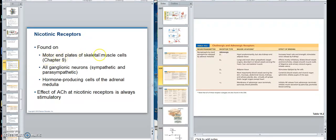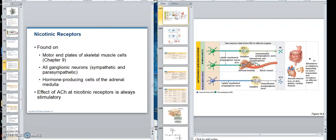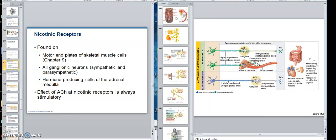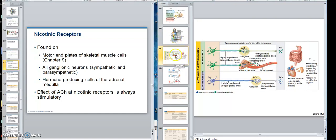The nicotinic are found on motor end plates of skeletal muscle. Remember now, acetylcholine is the one for skeletal muscle. That's the somatic though. The somatic nervous system, which I don't have here, but the somatic motor nervous system also uses acetylcholine and the receptor for it is nicotinic. And all preganglionic fibers, all postganglionic neurons, nicotinic. Hormone producing cells in the adrenal medulla, because remember, the preganglionic synapses directly on the chromaffin cells. Effect of acetylcholine on nicotinic is always stimulatory. EPSP type of thing, excitatory post-synaptic potential.